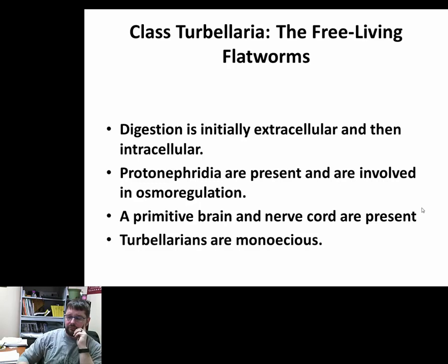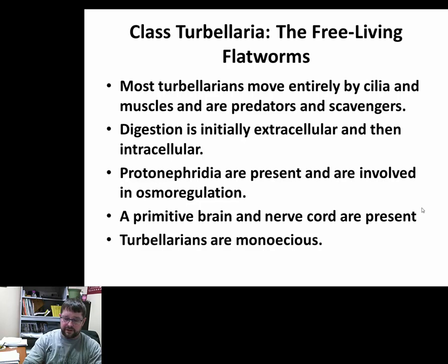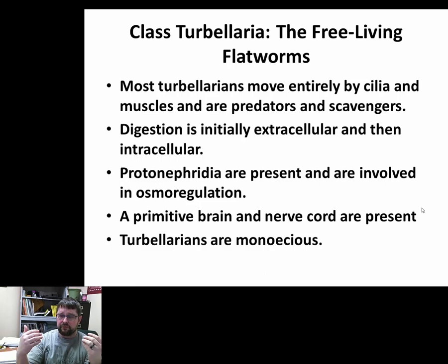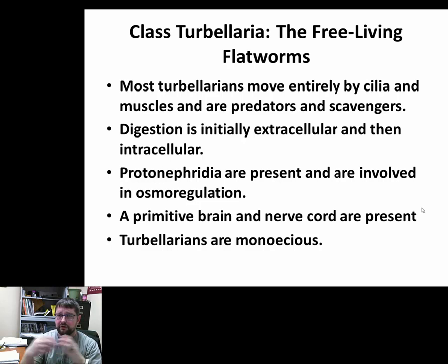Most Turbellarians are monoecious. Turbellarians are free-moving and free-swimming; they move by muscular movement and by cilia that cover their entire body, which allows them to move through aquatic environments. They can be predators, but most are scavengers — most will find a carcass and consume it, eating rotting flesh.